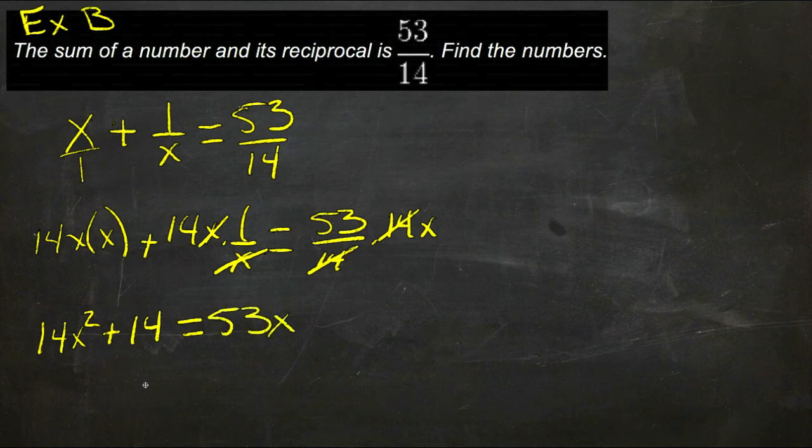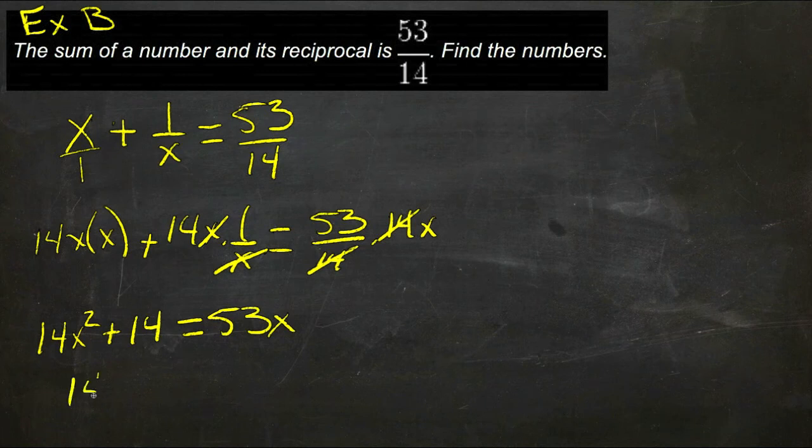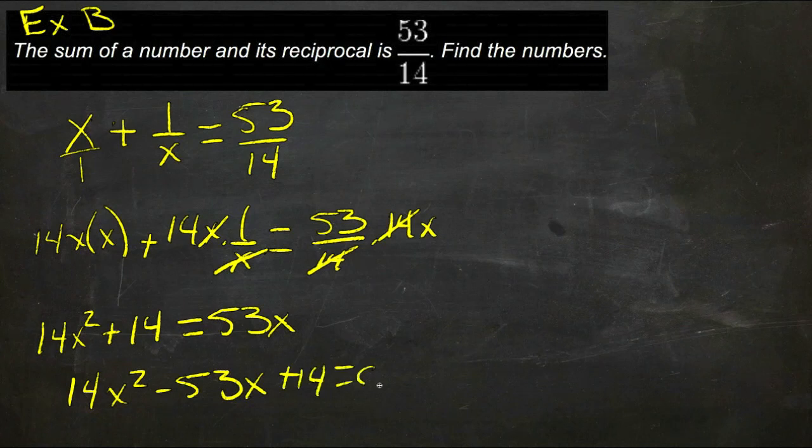If we move the x over to the other side, we'll get 14x squared minus 53x plus 14, equals 0.